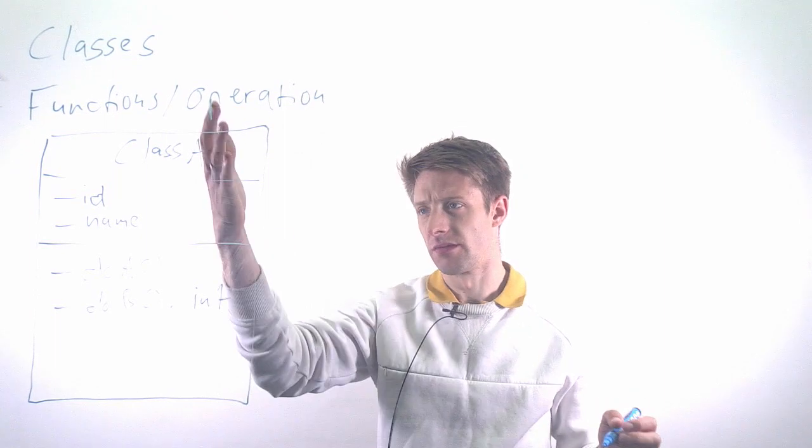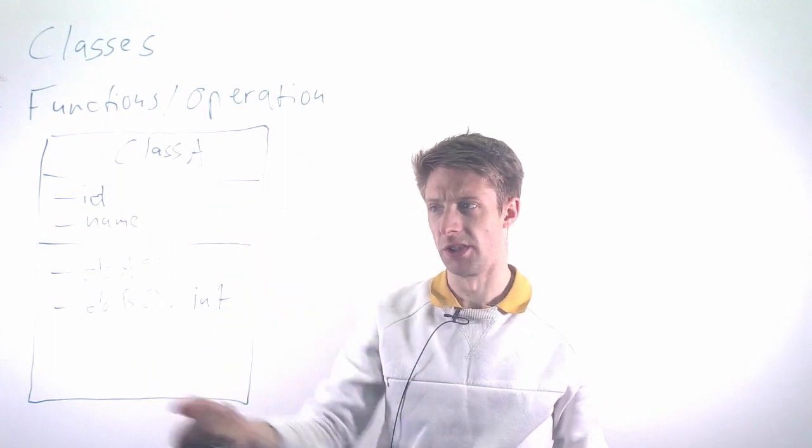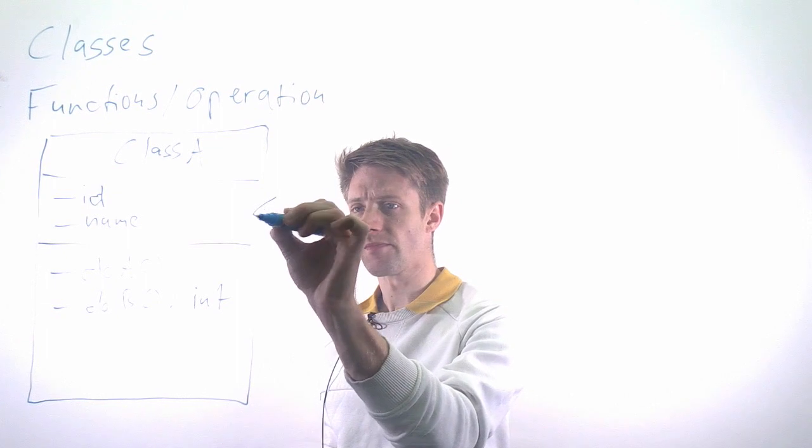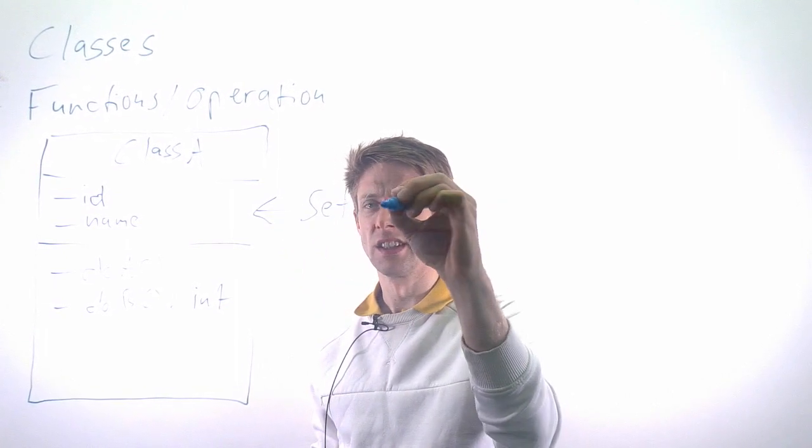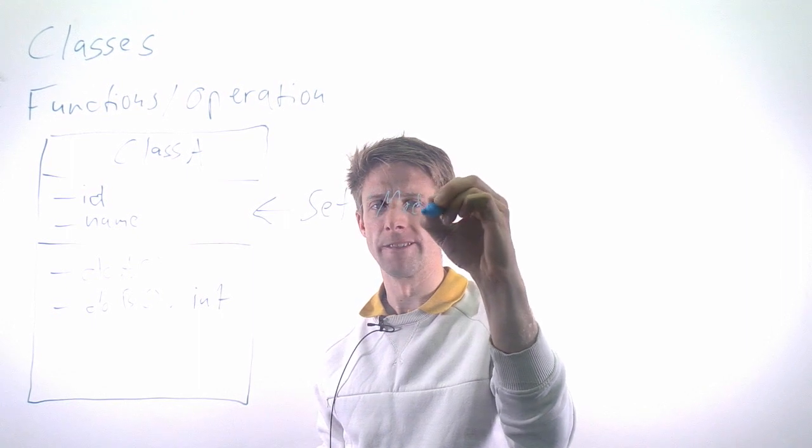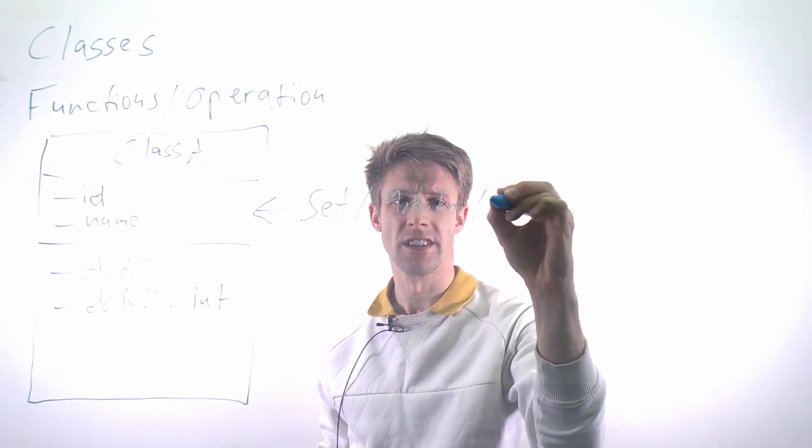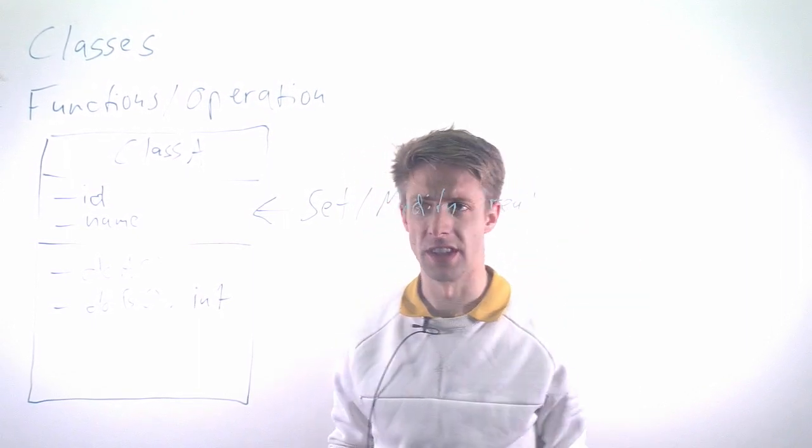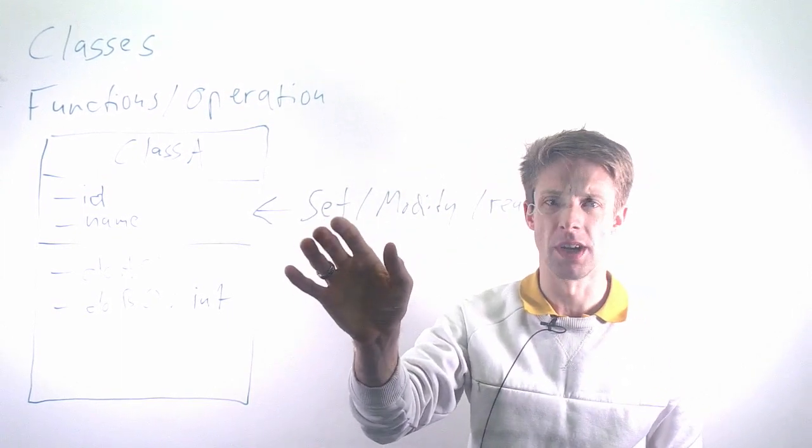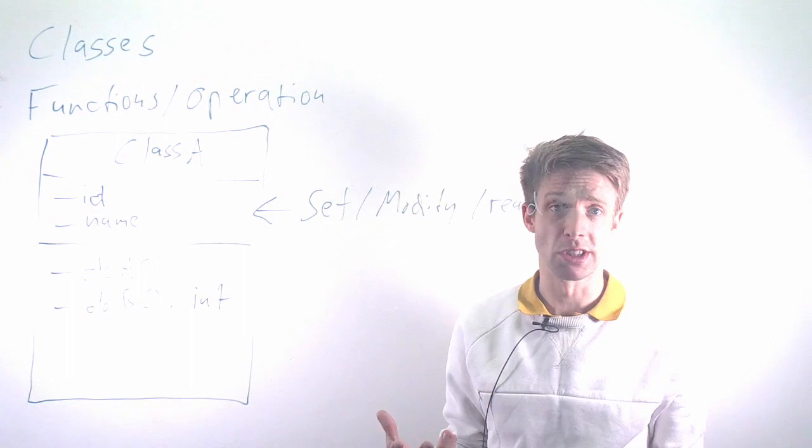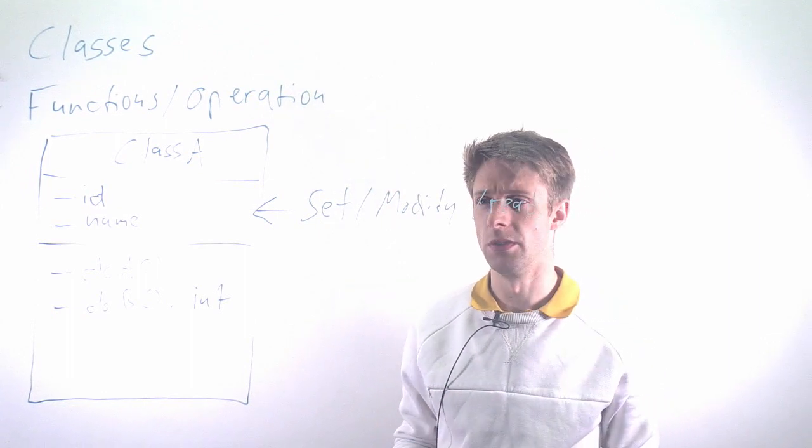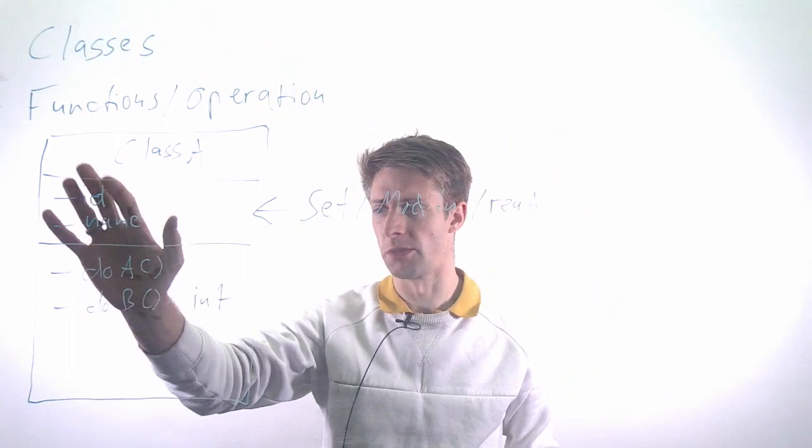So the strategy for testing a class, if this is our unit, is to say we should try to set, modify, and read all of the attributes. Can we read them, somehow set them, get them, modify them? Maybe some of them should not be settable, then we should not test that.